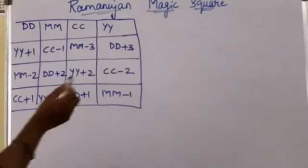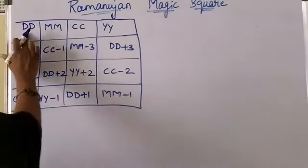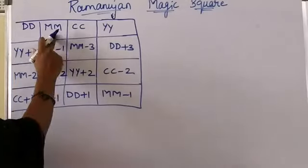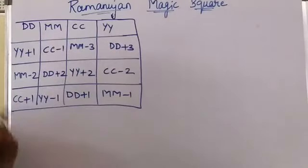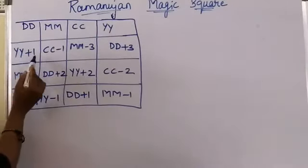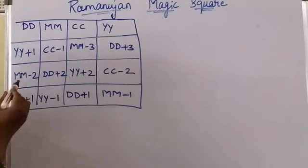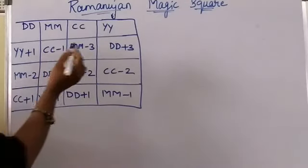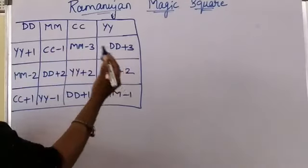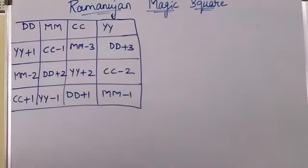You can create your own magic square using your date of birth. I will show you the format. The first row is: DD, MM, CC, YY. The second row uses: YY+1, CC-1, MM-3, DD+3. You can use your date of birth and fill in this format to get your own magic square.